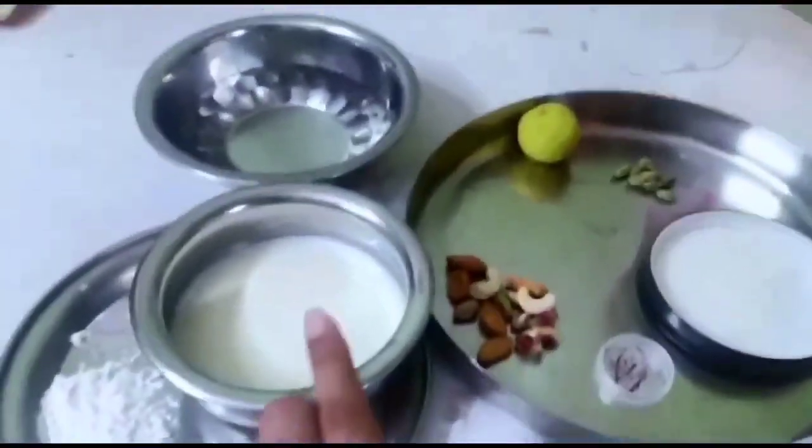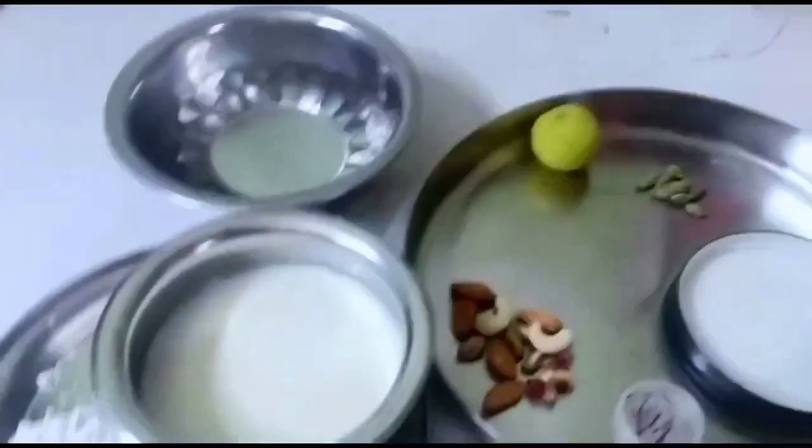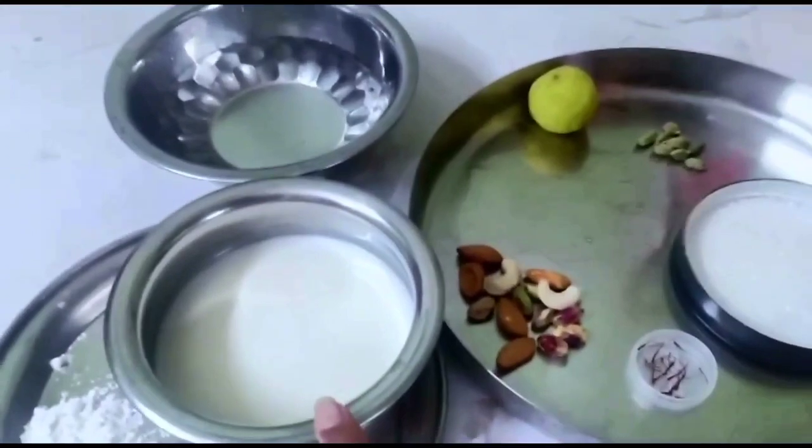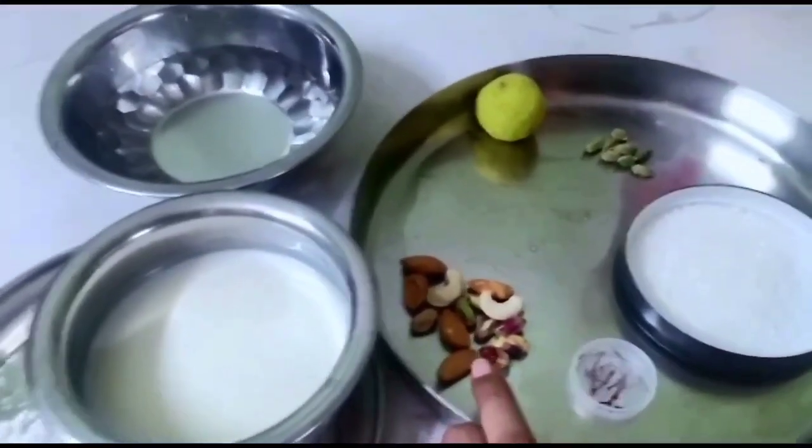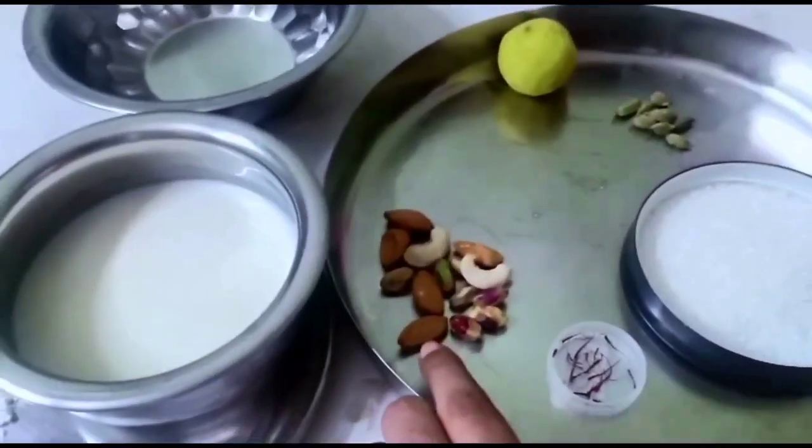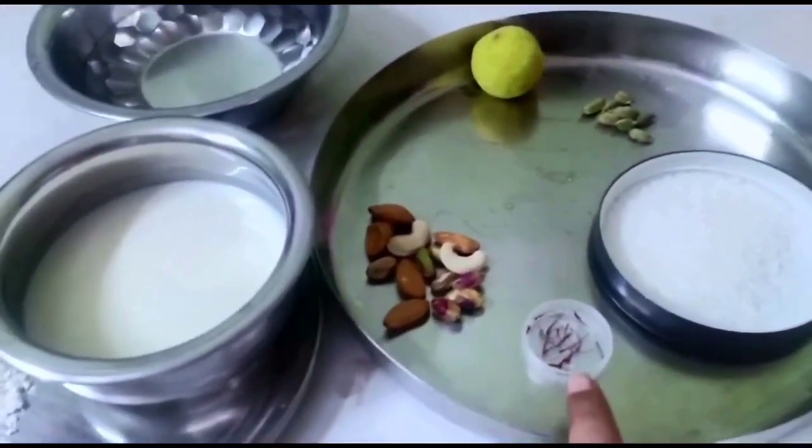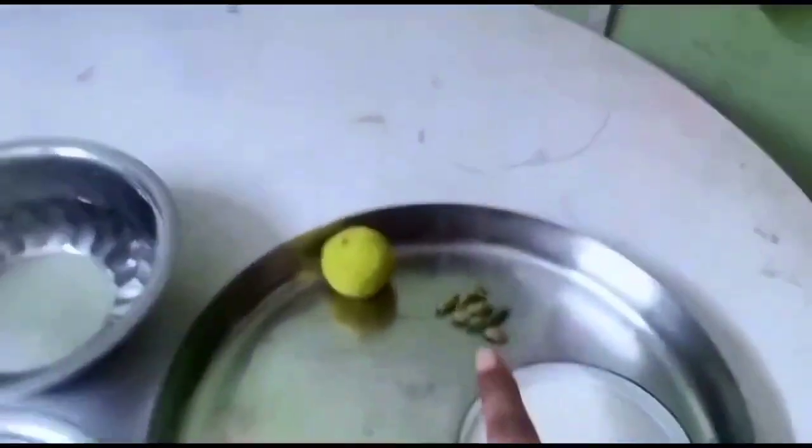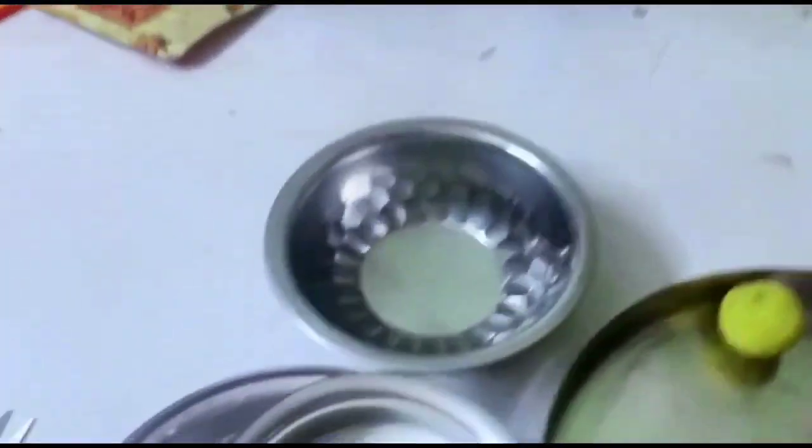For Rasmalai, you need milk and lemon, one liter of milk or half liter of milk, and dry fruits which is pista, badam, almonds, kesar, sugar, elaichi, and water.